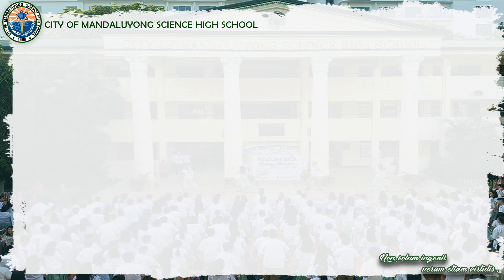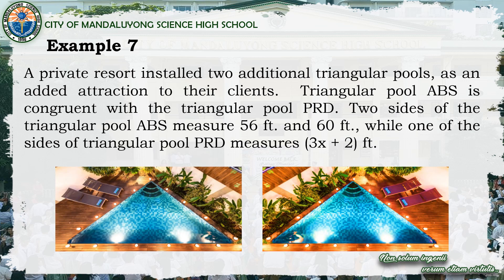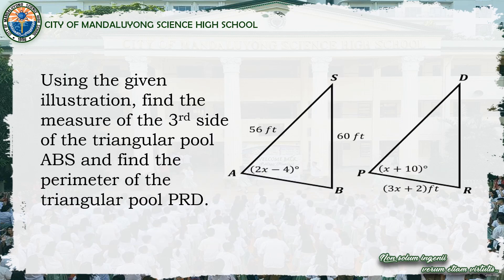The next slide involves problem solving with triangle congruence. A private resort installed two additional triangular pools. Triangular pool ABS is congruent with triangular pool PRD. Two sides of pool ABS measure 56 feet and 60 feet, while one side of pool PRD measures 3x plus 2 feet. Find the measure of the third side of pool ABS and the perimeter of pool PRD.